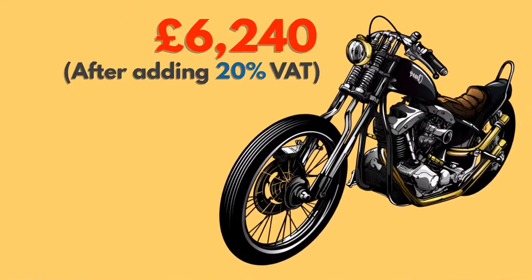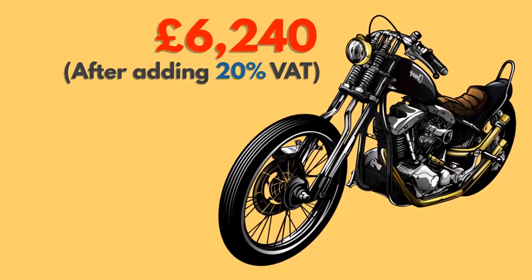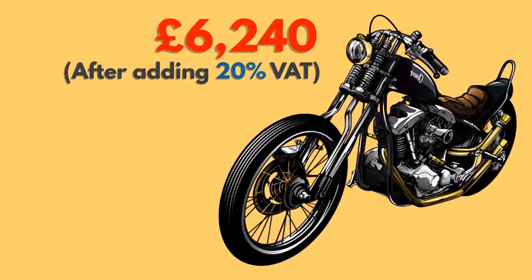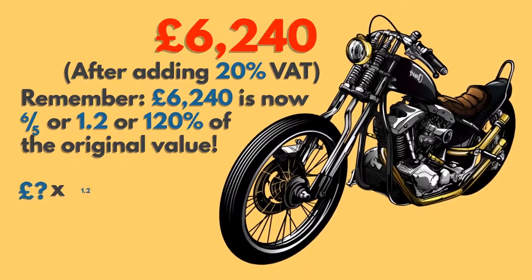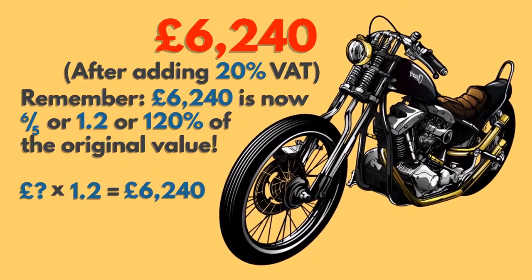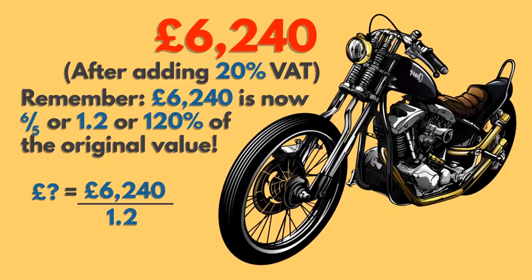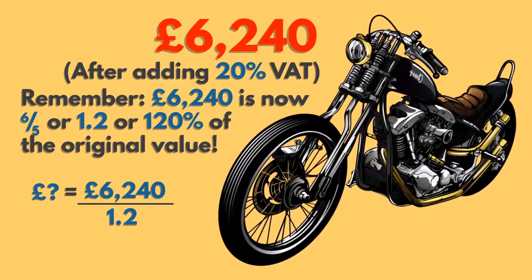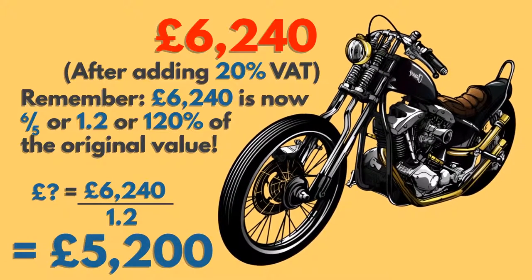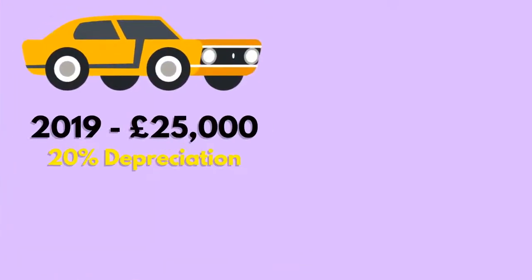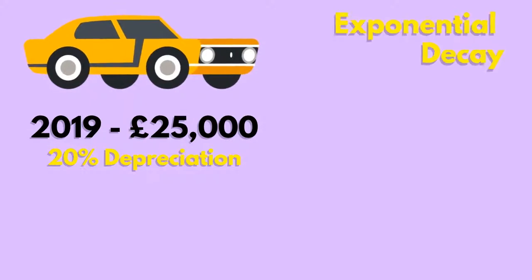This is the price of a motorbike with 20% VAT — value added tax. What would the price be before VAT? Rearranging the formula will help with this equation. £6,240 divided by 1.2 equals £5,200.